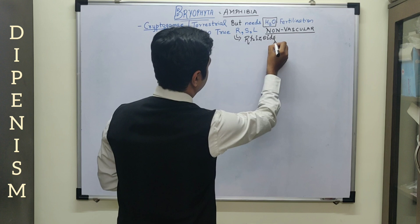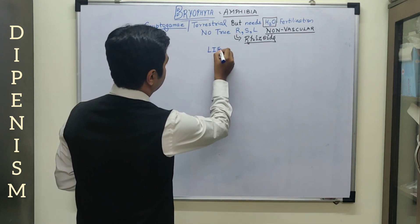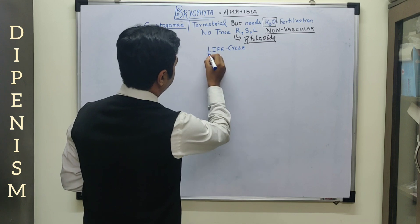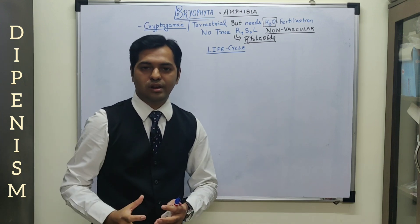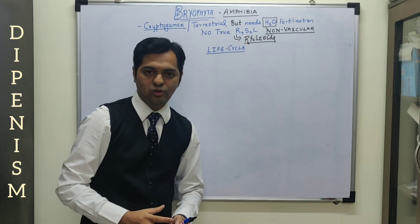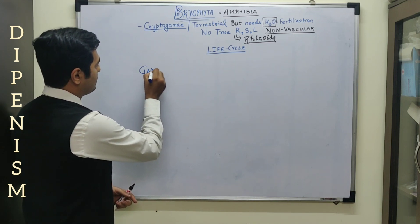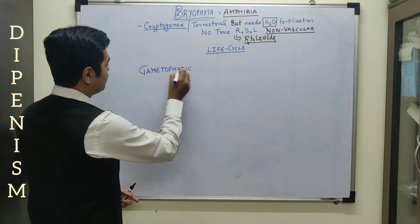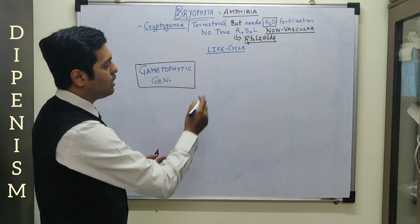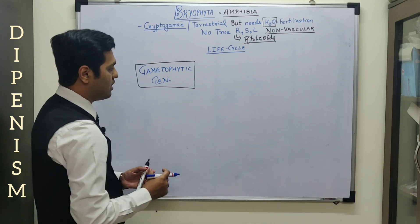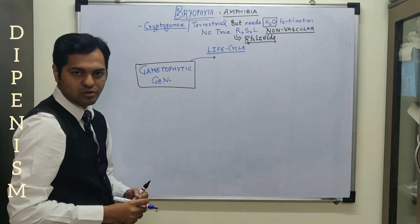Now let us discuss the life cycle of bryophyta. In general, we are aware that any plant mainly shows two generations — one of them is the sporophytic generation and the other being the gametophytic generation. But remember, future doctors, that in bryophytes the first dominant generation is the gametophytic generation. So here the life cycle starts with the gametophytic generation. The gametophytic generation mainly contains the false root, false stem, and false leaf — so root, stem, and leaf-like structures are present.